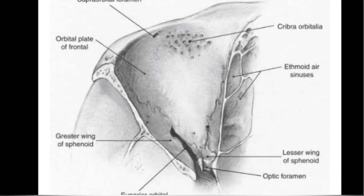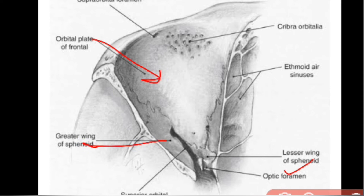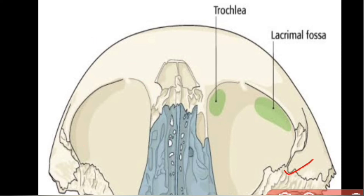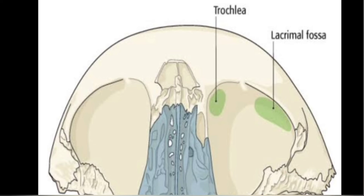The roof of the orbit is triangular in shape and formed by two bones: the orbital plate of the frontal bone and the lesser wing of the sphenoid. It has a fossa for the lacrimal gland on the anterolateral aspect, and a trochlear fossa on the anteromedial aspect where the trochlea attaches. The roof is also thin.